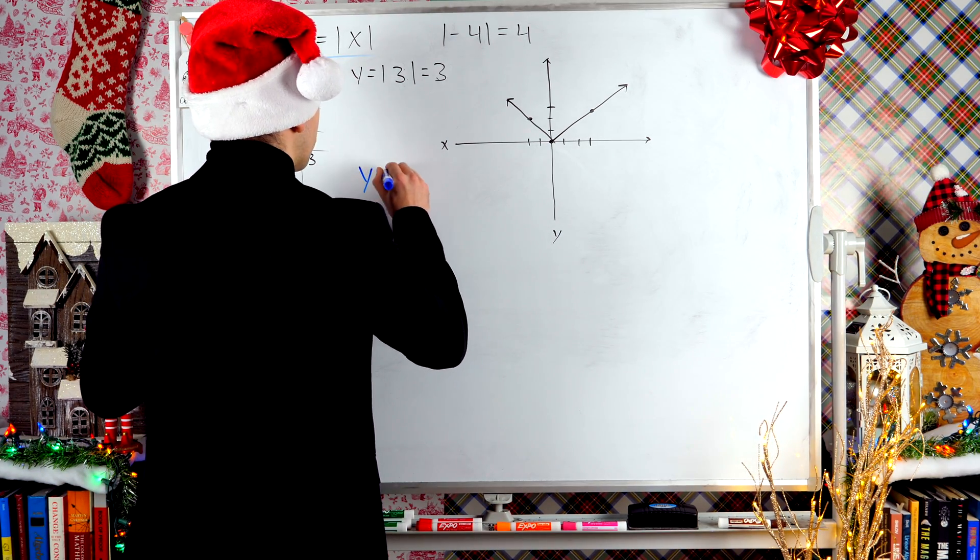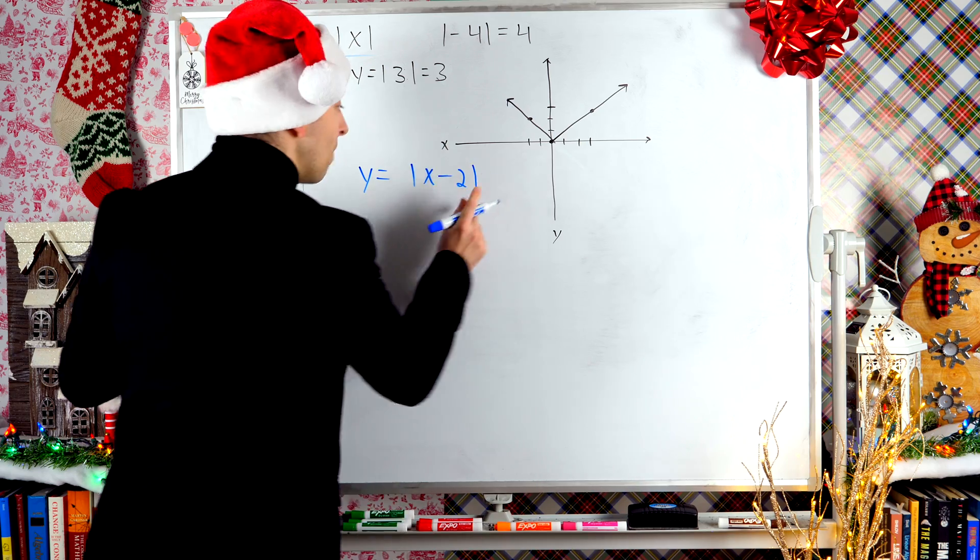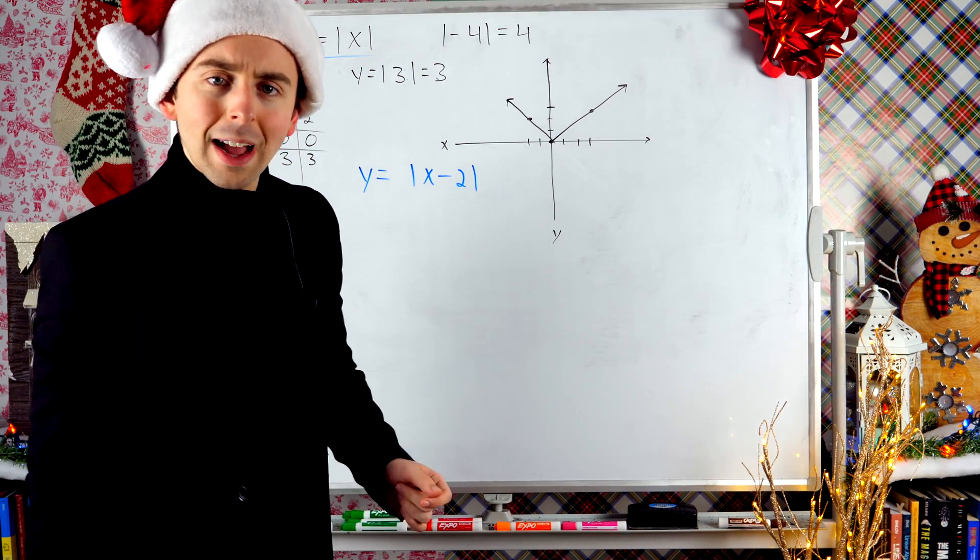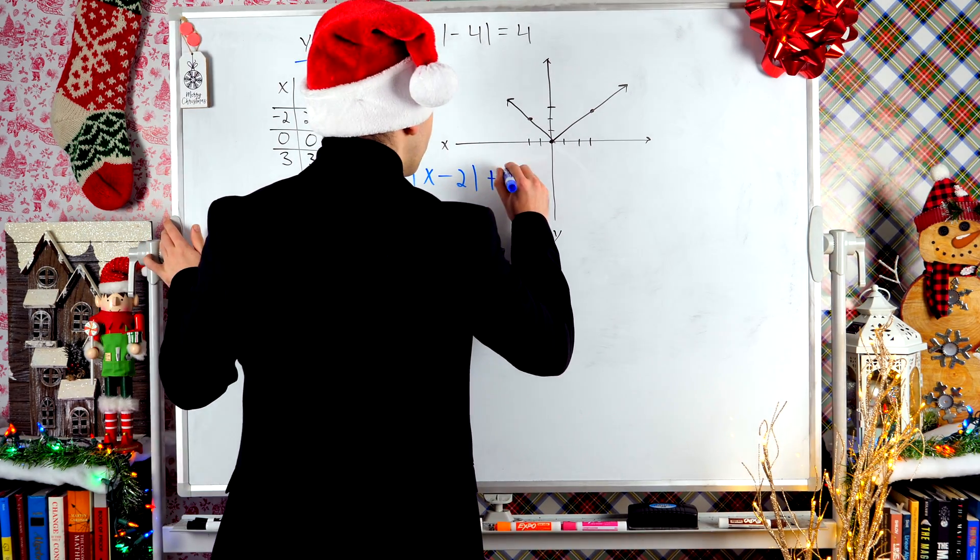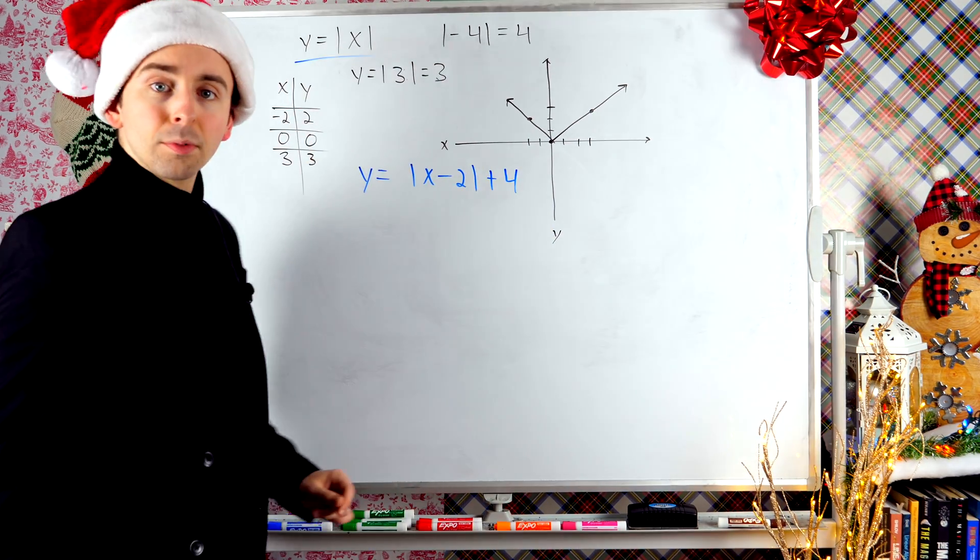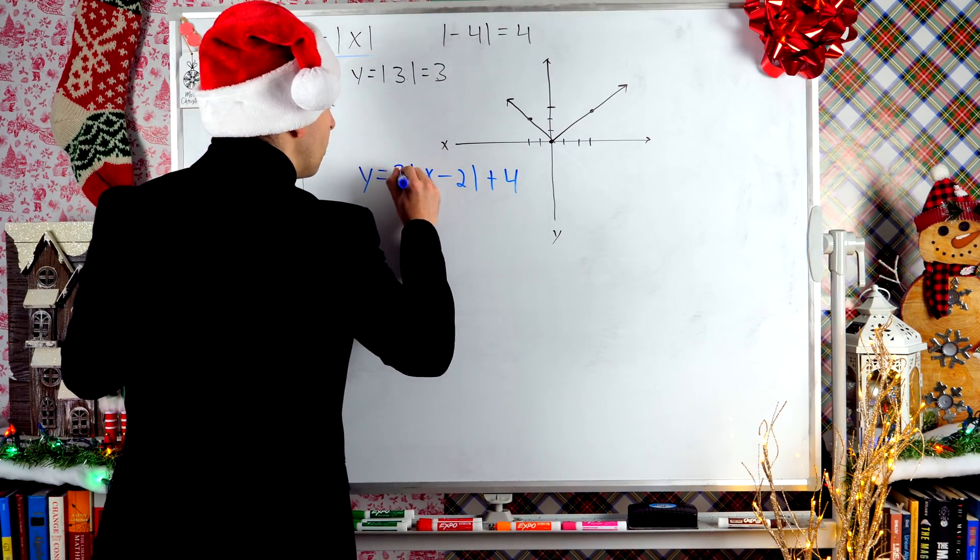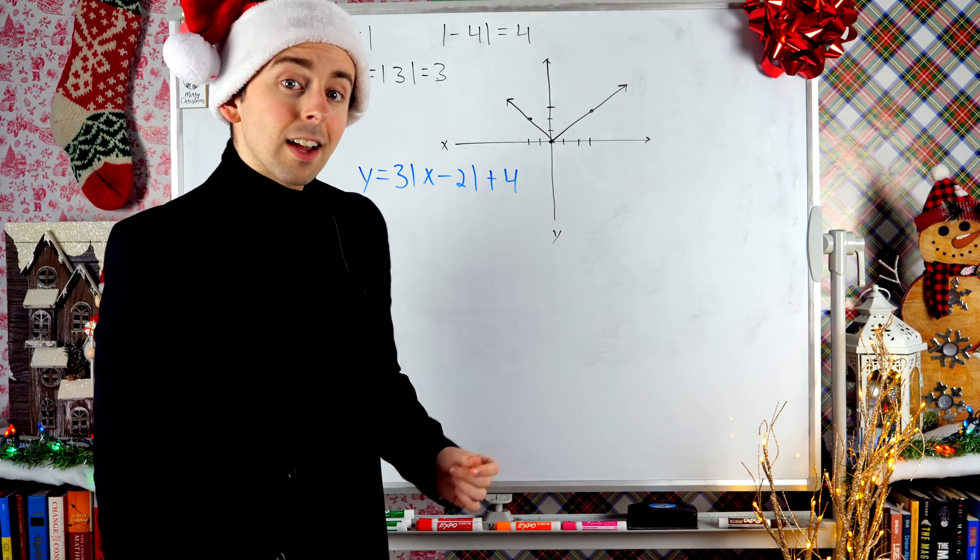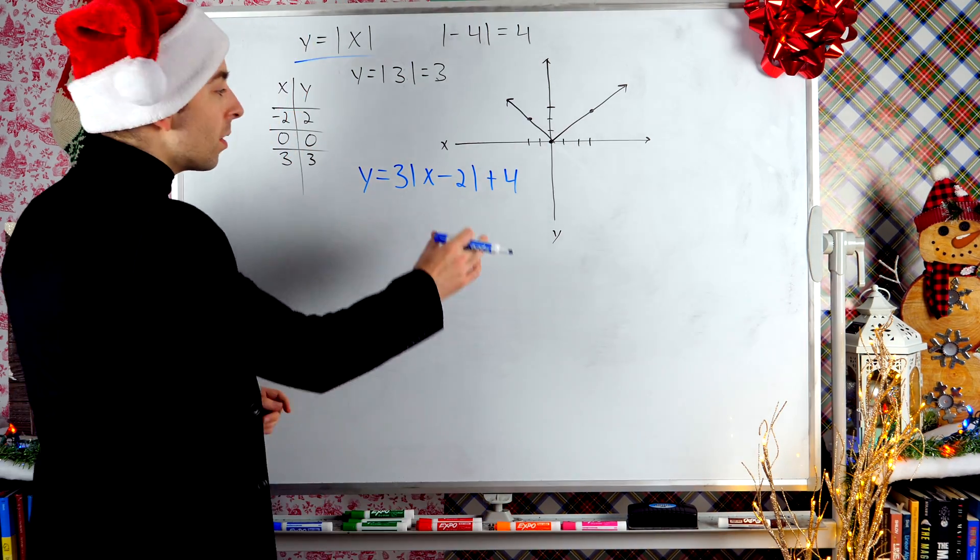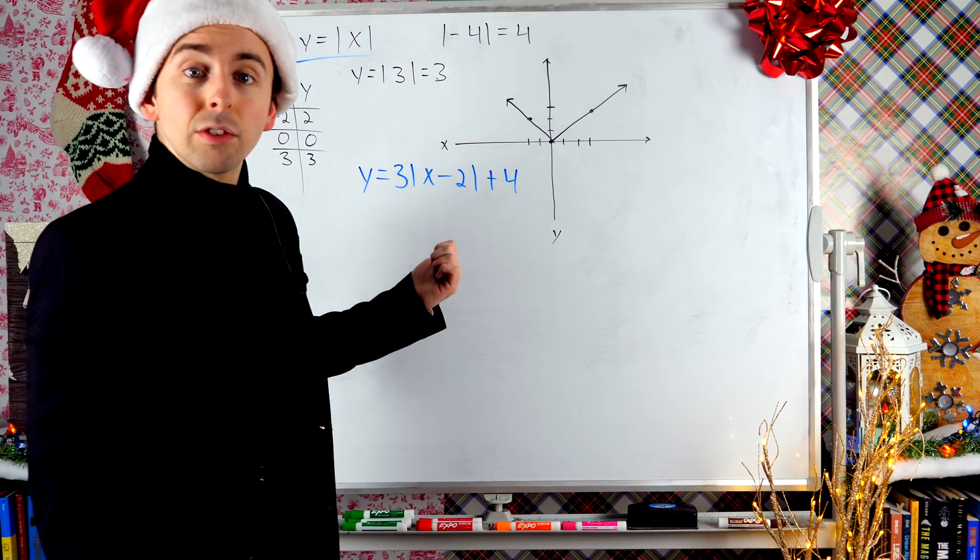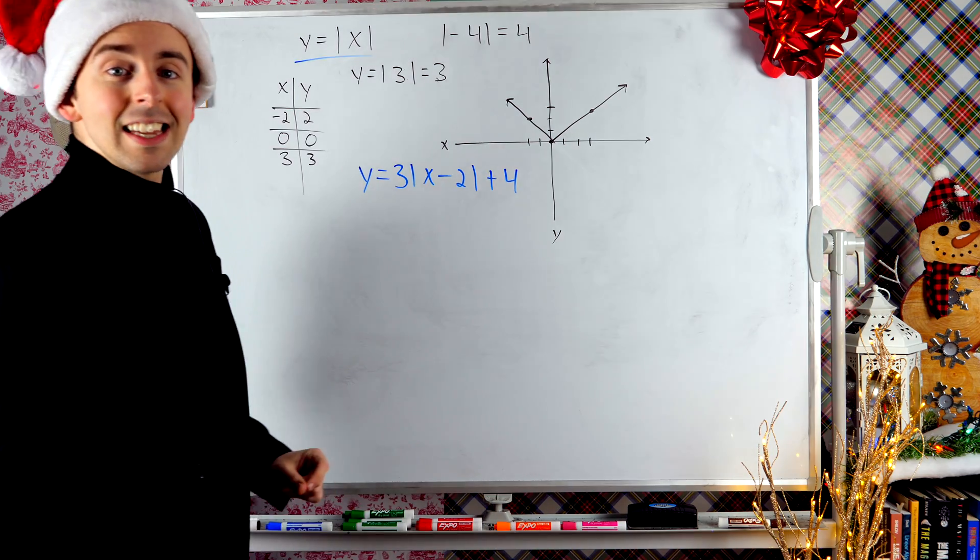But what's going to happen if we make some transformations to it? Suppose we wanted to graph the absolute value of x with a minus 2 in the absolute value bars. What would that look like? Or what if we had a plus 4 outside of the absolute value bars? Or what if we multiply the absolute value part by 3? What would this stuff look like? We'll talk about that in later lessons, but you can start to investigate what these sorts of graphs would look like in the same way that we graphed this one here.